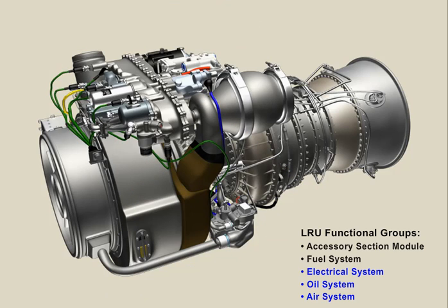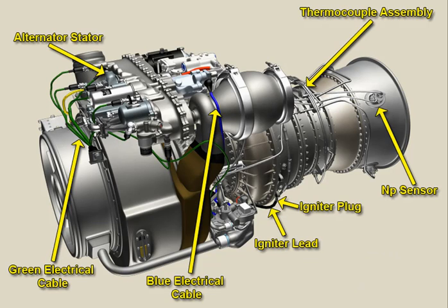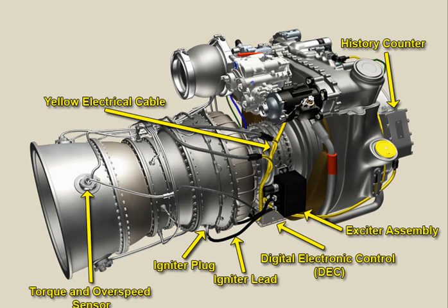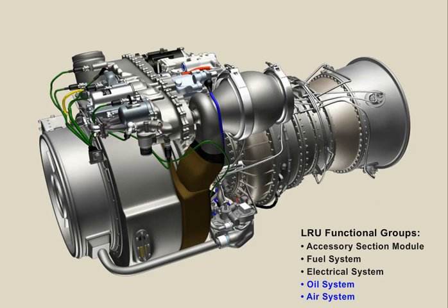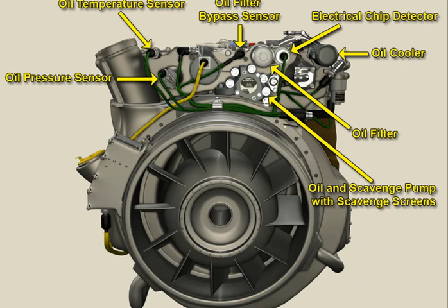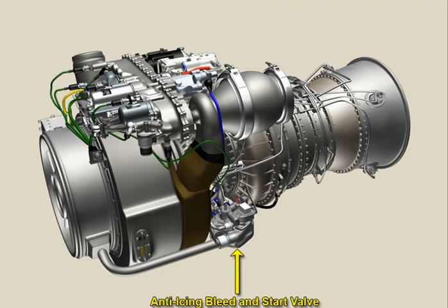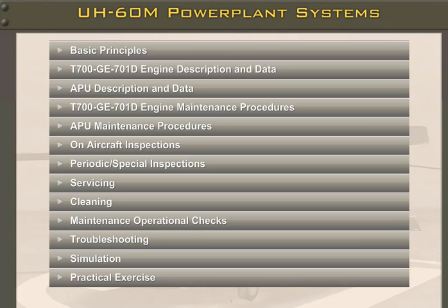The electrical system LRUs are the alternator stator, thermocouple assembly, MP sensor, igniter plug, igniter lead, blue electrical cable, green electrical cable, history counter, exciter assembly, digital electronic control (DEC), torque and overspeed sensor, and yellow electrical cable. Oil system LRUs are the oil temperature sensor, oil filter bypass sensor, electrical chip detector, oil cooler, oil filter, oil and scavenge pump with scavenge screens, and oil pressure sensor. The air system LRU is the anti-icing bleed and start valve.